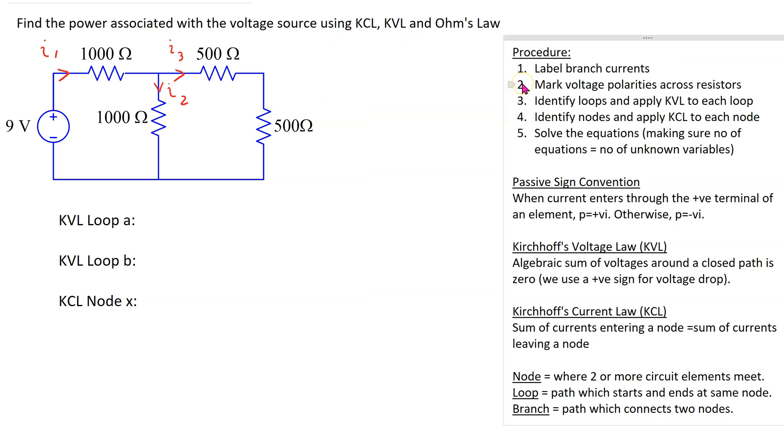The next step is to mark voltage polarities across resistors using the assumed currents. So we can see here that current I1 is entering the resistor at this end and leaving the resistor at this end. So the end where the current enters is higher potential and is marked positive.